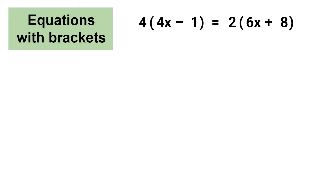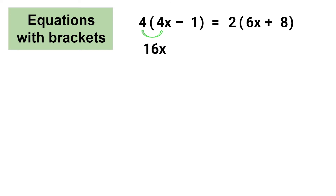I'm going to start by expanding the brackets on the left side of the equal sign, which means I'm going to multiply the term outside of the brackets by the terms inside. So first 4 multiplied by 4x equals 16x. Next I need to multiply 4 by 1, and remembering to consider the operation to the left of the term, this is 4 multiplied by negative 1, which equals negative 4.